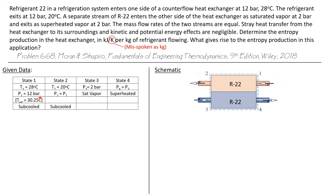Let's see what we know about each of the four states. State one has a temperature of 28 degrees C and a pressure of 12 bar. In the R22 saturation table at 12 bar, the saturation temperature is 30.25 degrees C. This temperature is less than that, therefore state one is a sub-cooled liquid.